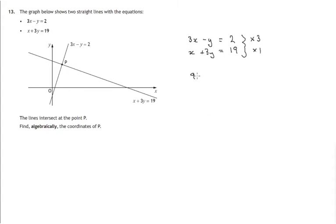We'll have 9x minus 3y equals 6. x plus 3y equals 19. Now remember we're trying to get rid of y term. Negative 3y plus 3y. These are opposite signs so we'll just add them. 9x plus x is 10x. 3y and the negative 3y cancel.